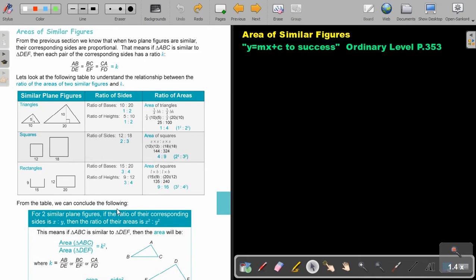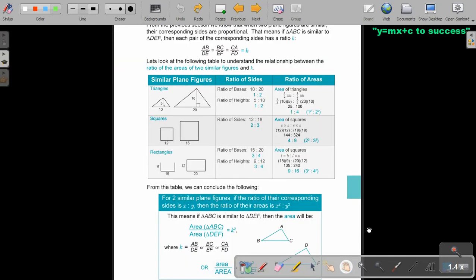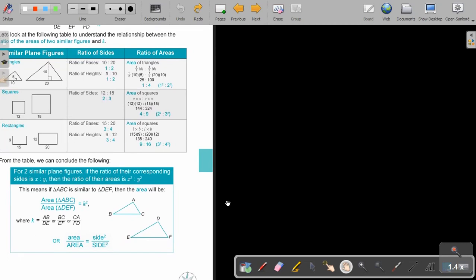So from the table, we can conclude the following. For two similar plane figures, if the ratio of their corresponding sides is x to y, then the ratio of their areas is x squared to y squared. So basically, I will just take the ratio and I square it. And that is just what I say. So I will take a side and a side and I square it. And then I will get the ratio of the area.